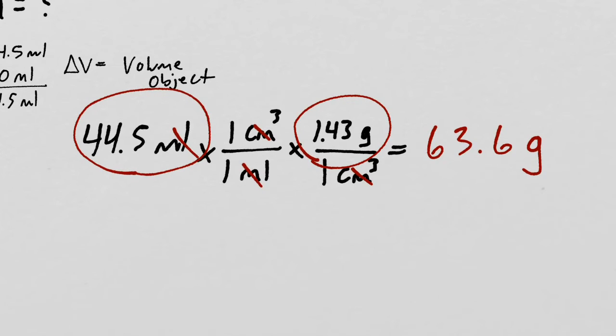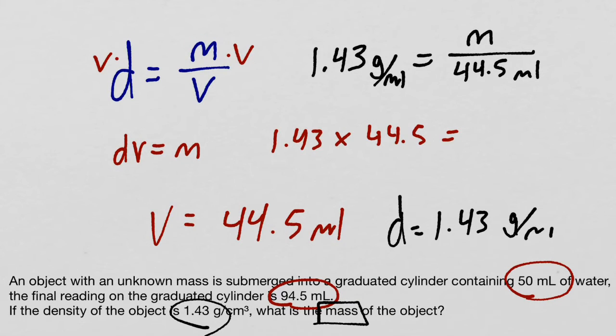This is exactly what we have using the formula. Here we're seeing it with dimensional analysis and we're using conversion factors to cancel units and to convert. Here we're just plugging in these values into a newly rearranged formula, and we can still obtain the same answer: 63.6 grams.